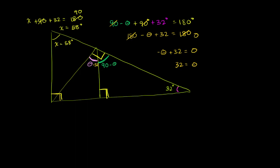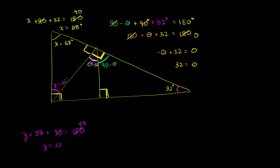Now what else can we figure out? If this angle over here is a right angle — and I'm just redoing the problem to show there are multiple ways to get the answer — this angle is supplementary to it and also has to be 90 degrees. So then we have this angle y plus 58 plus 90 is equal to 180. Subtract 90 then 58 from both sides, and you get y is equal to 32 degrees.